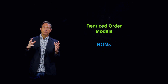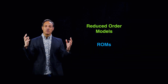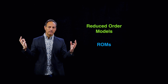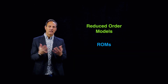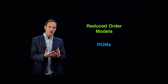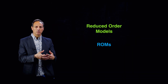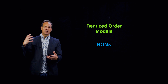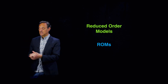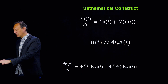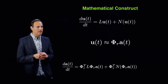The idea of reduced order modeling is to take a high-dimensional PDE or ODE system, find a low-dimensional subspace, and build a surrogate model in that subspace which is much cheaper to run and gives you an accurate representation of the full high-dimensional system.